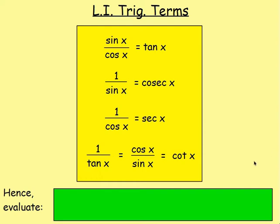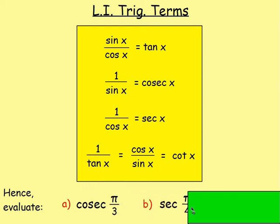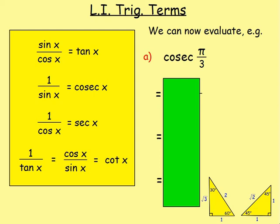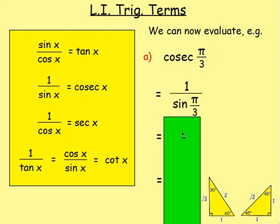So we need to remember these and be able to evaluate them. For example, we have to evaluate cosec(π/3), or sec(π/4), or cot²(π/6). Let's go to each one of these. For the first one, if we evaluate cosec(π/3), the first thing we need to think is: what is cosec equal to? And we know cosec is 1 over sin. So instead of cosec(π/3), we write that as 1 over sin(π/3).